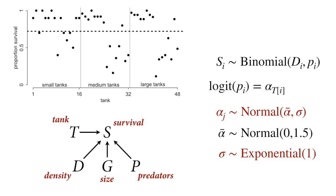Sigma is the variable I had fixed in the previous examples, and now we're going to learn it from the data. To learn it from the data, we also need to give it a prior — an exponential prior. The exponential is a good default because it's easy to understand: the only information it contains is the average displacement from zero. In this case that's one, so this is an exponential with rate 1. It has a long tail so sometimes you want to use something else, but it's a good starting point.